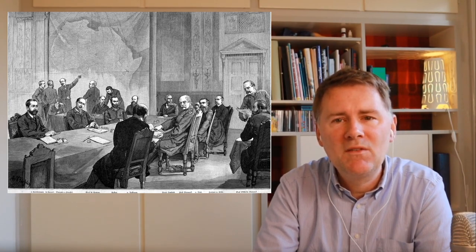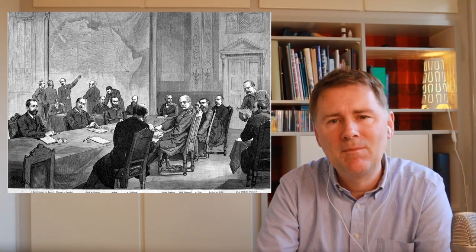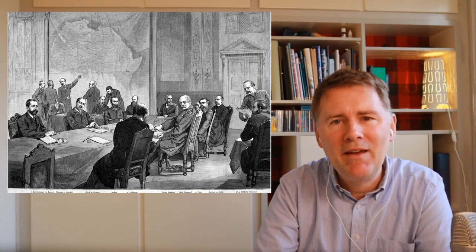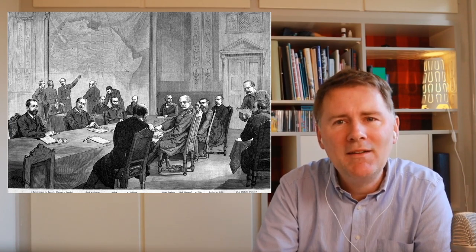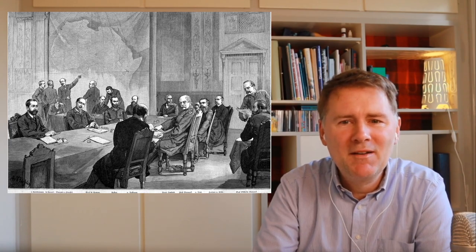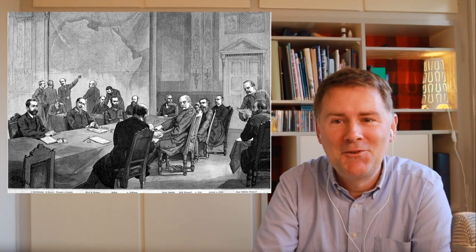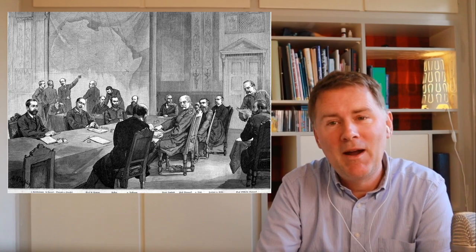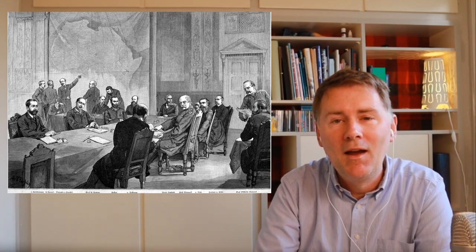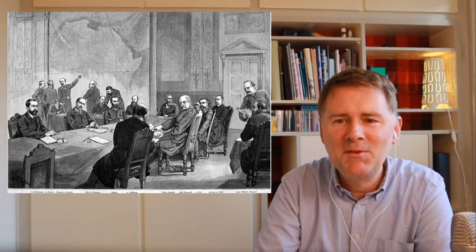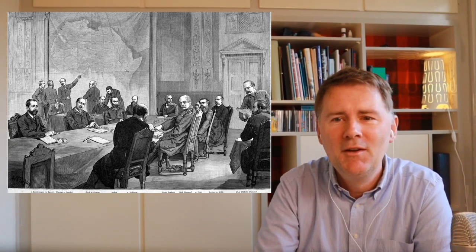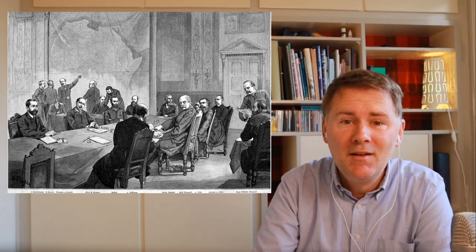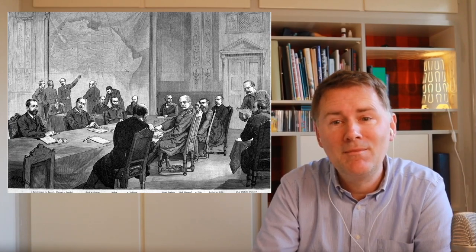Up to that point, Africa was not really a central target for European colonialism. This changed towards the end of the 19th century. The picture here depicts the Berlin Conference of 1884 — you can recognize Otto von Bismarck, who called the meeting, and the topic of the meeting was clearly Africa and its colonization. The Berlin Conference of 1884 led to an agreement between 14 states including Germany, the UK, Belgium, and France to organize the colonialist exploitation of Africa, also known as the Scramble for Africa.